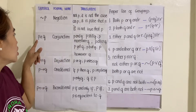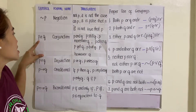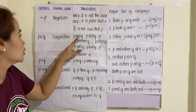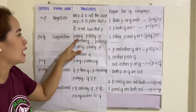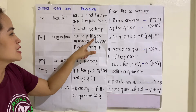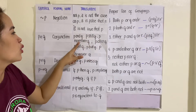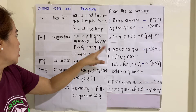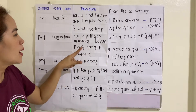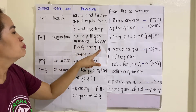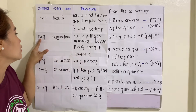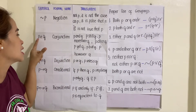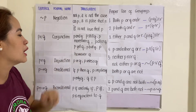Next is the conjunction. This is the symbol. It can be translated as 'P and Q,' 'P still Q,' 'P moreover Q,' 'P also Q,' 'P yet Q,' 'P but Q,' or 'P however Q.' Take note that this symbol can also be translated as 'yet' and 'but.'